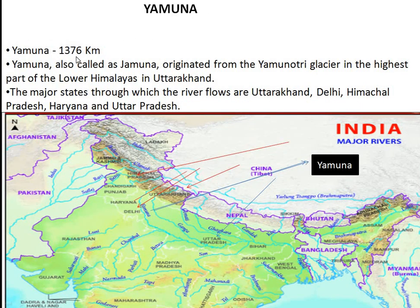Next is Yamuna, which is 1376 kilometers and is also known as Jamuna — knowing alternate names is important for MCQs. It originates from the Yamunothri Glacier in the higher part of the lower Himalayas in Uttarakhand. The major cities through which the river flows include Uttarakhand, Delhi, Himachal Pradesh, and Haryana. Yamuna flows on the north side of the map.